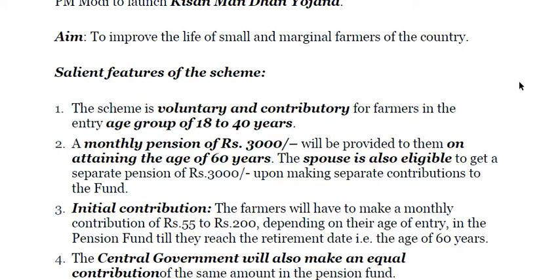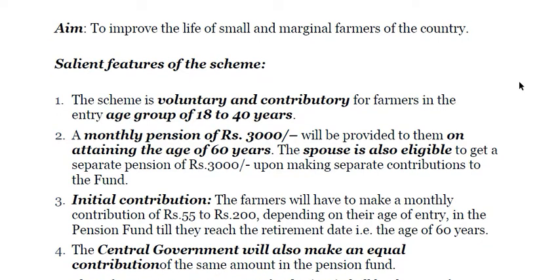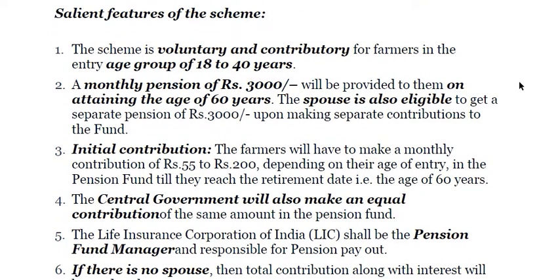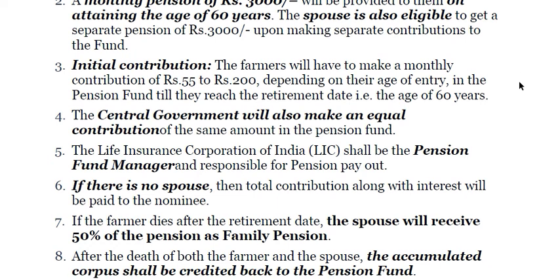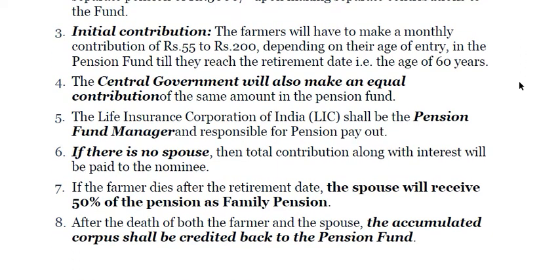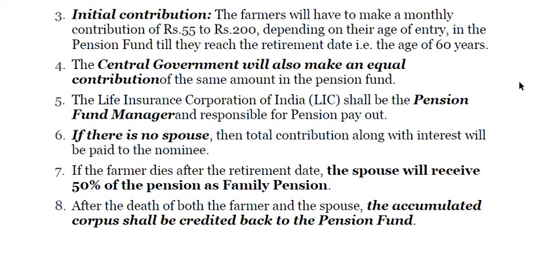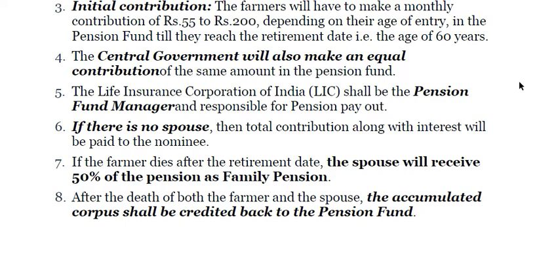Under Kisan Mandhan Yojana, monthly pension is rupees 3,000 on attaining the age of 60 years, and the spouse is also eligible. Farmers contribute between rupees 55 to rupees 200 depending upon the age of entry into the pension fund. Till they reach their retirement age of 60 years, the central government will also make an equal contribution. For example, if a farmer contributes rupees 200, the central government will also contribute rupees 200. LIC will be the pension fund manager and responsible for the pension payout.